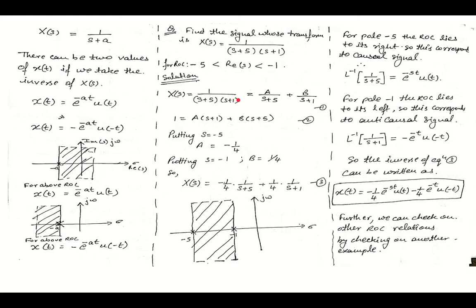X(s) = 1/((s+5)(s+1)) is given. Using the partial fraction method: 1/((s+5)(s+1)) = A/(s+5) + B/(s+1). By substituting s = -5 and s = -1, we calculate A = -1/4 and B = 1/4. This yields X(s) = (-1/4)·(1/(s+5)) + (1/4)·(1/(s+1)).